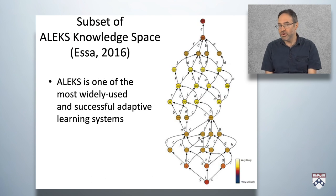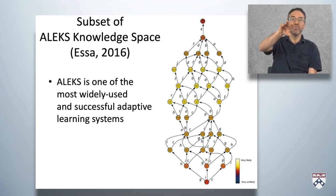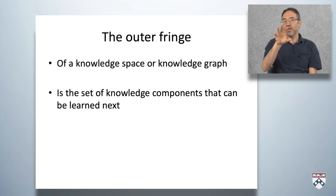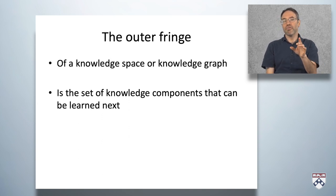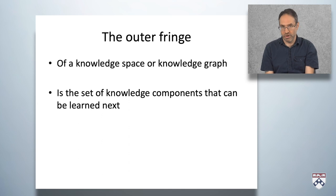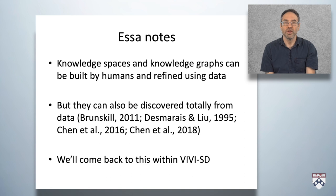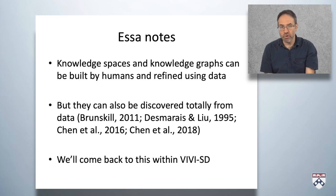One of the most widely used learning systems that uses a knowledge space is ALX, also one of the most widely used and successful adaptive learning systems. Here you see a very small subset of the ALX knowledge space from Al-S's paper. Within a knowledge space — or really any knowledge graph — one key concept is the outer fringe: the set of knowledge components that can be learned next given what you already know. You can also think of it as your zone of proximal development. Knowledge spaces and knowledge graphs can be built by humans and refined using data, but they can also be discovered totally from data, completely bottom up.